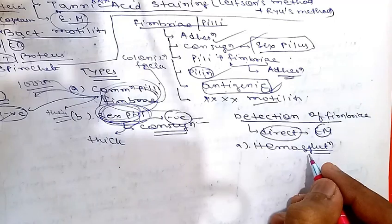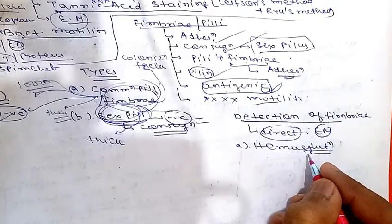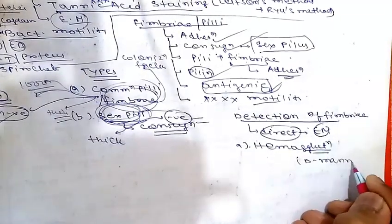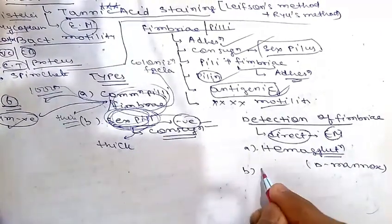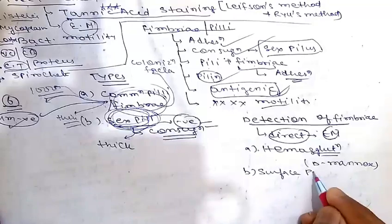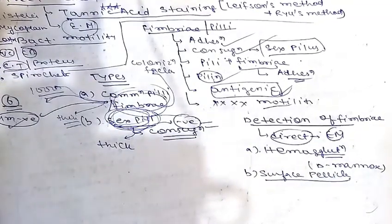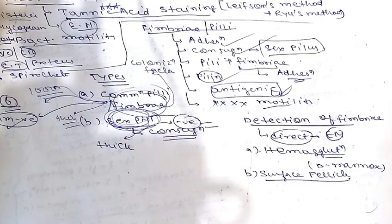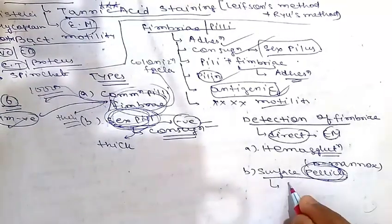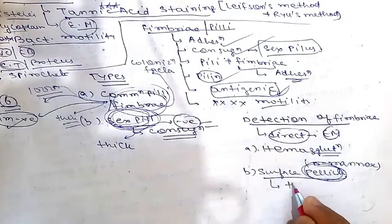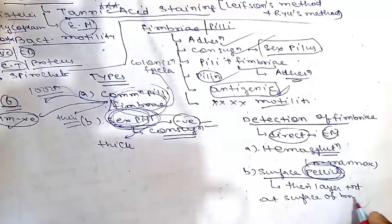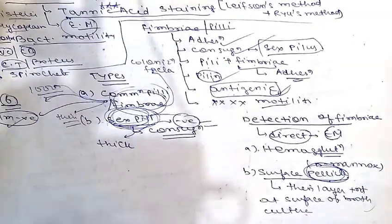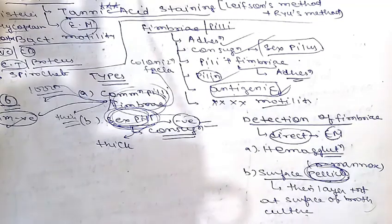Indirect methods for detecting pili include hemagglutination — many piliated bacteria such as E. coli and Klebsiella and Neisseria strongly agglutinate RBCs of guinea pigs, horses, and pigs. In some bacteria, hemagglutination may be specifically inhibited by D-mannose — important for MCQs. Another indirect method is surface pellicle: some aerobic piliated bacteria form a thin layer at the surface of the growth culture, called a pellicle, consisting of aerobic bacteria adhered to the surface by their fimbriae.